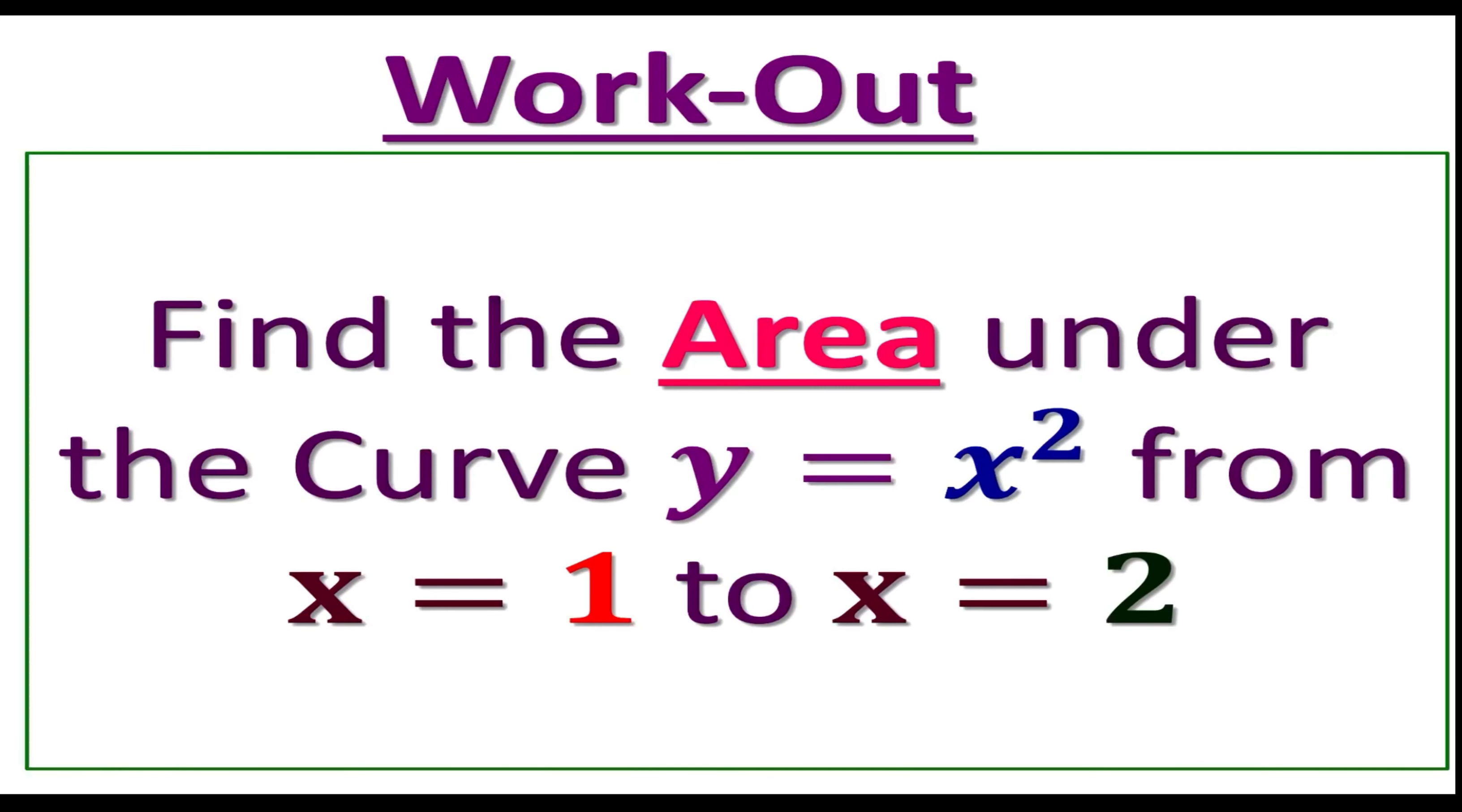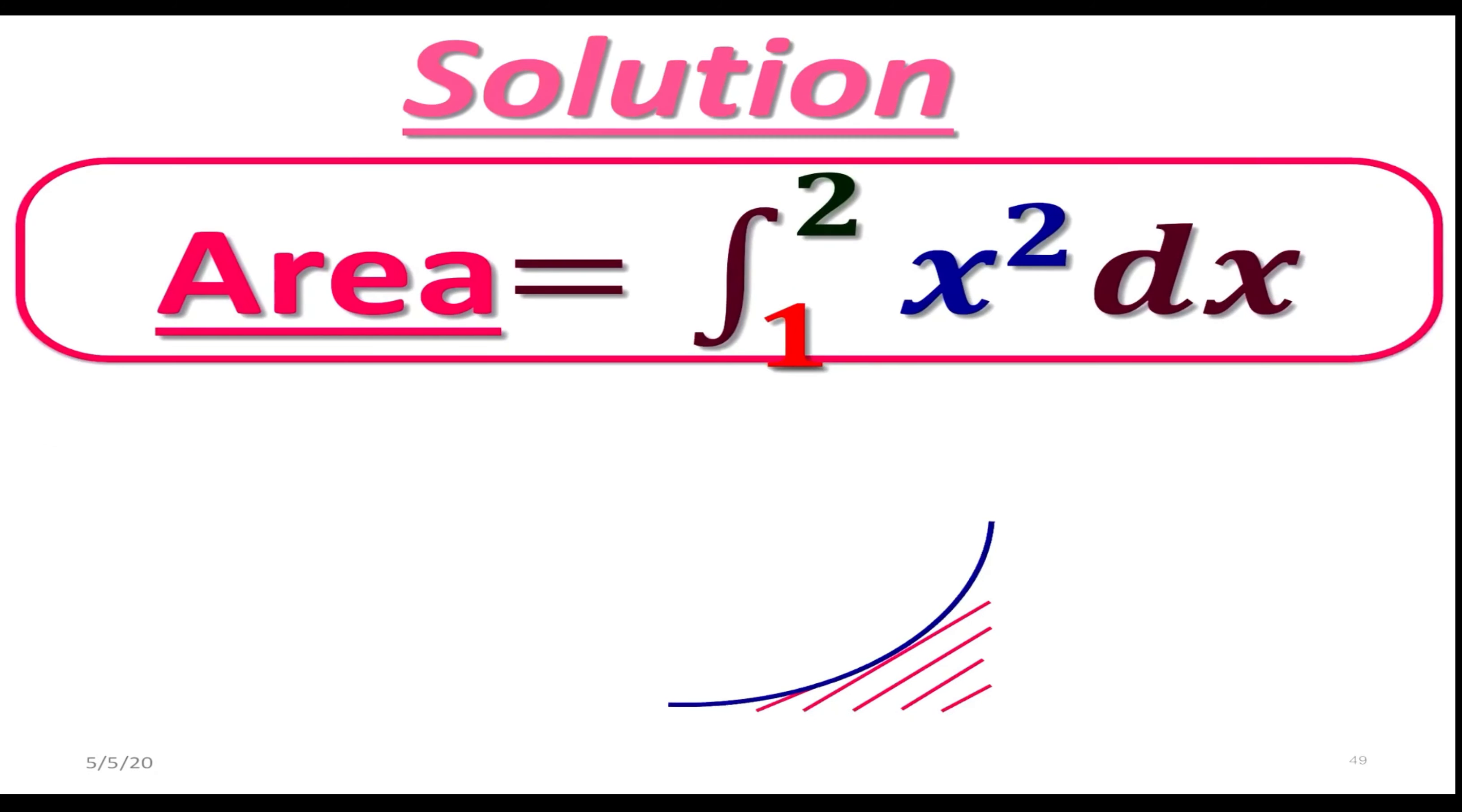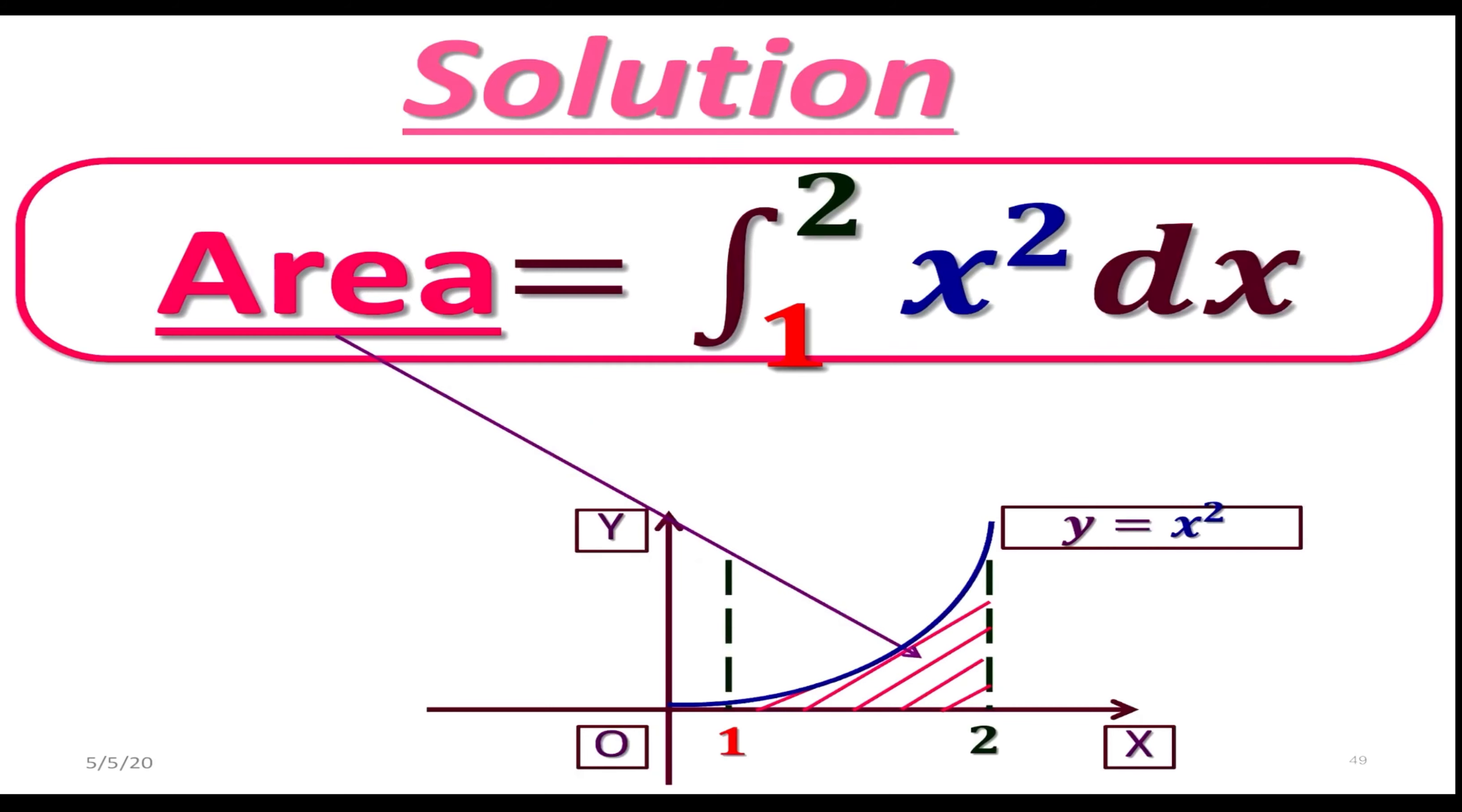Suppose we need to find the area under a curve y equals x squared from 1 to 2. This area can be found by taking the definite integral from 1 to 2 of x squared with respect to x. In a nutshell, it comes down to evaluating this integral. If it comes down to a graphical representation, remember that the graph of x squared is just a parabola passing through the origin, and we are only interested in the right branch of this parabola.